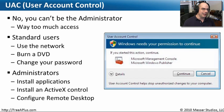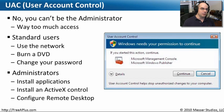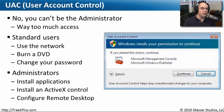What User Account Control allowed you to do is to run as a normal user. Only at the times when you would need that extra administrator access, the operating system would stop and say we need your permission to continue to do some of these things. You would have to provide the right credentials or provide the access for the operating system to do that. In that way, you always knew if your OS was doing something.